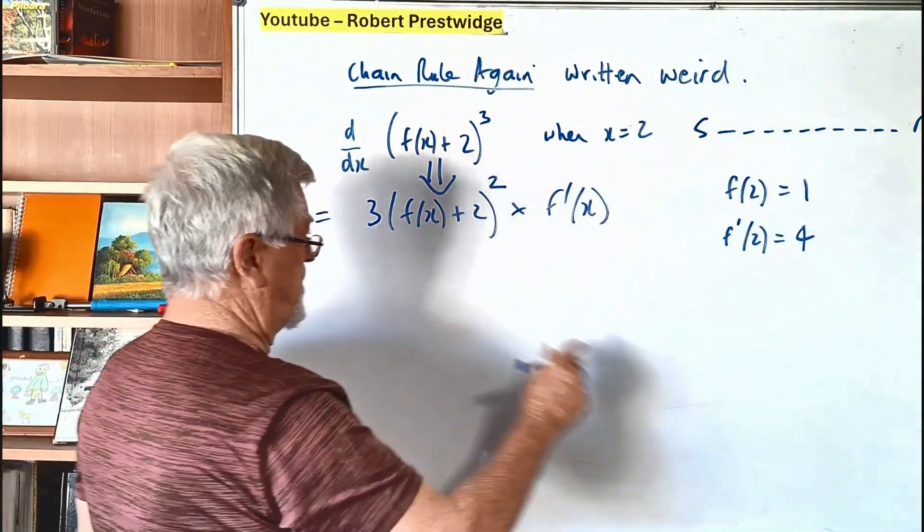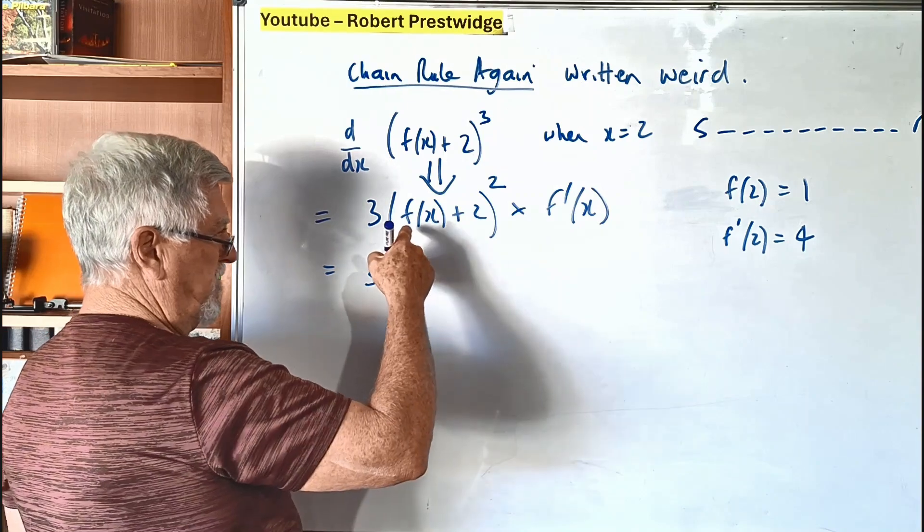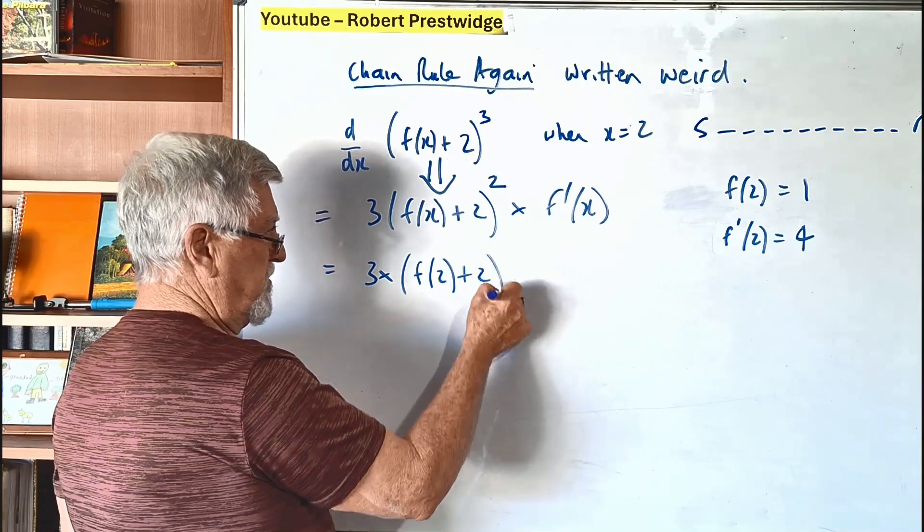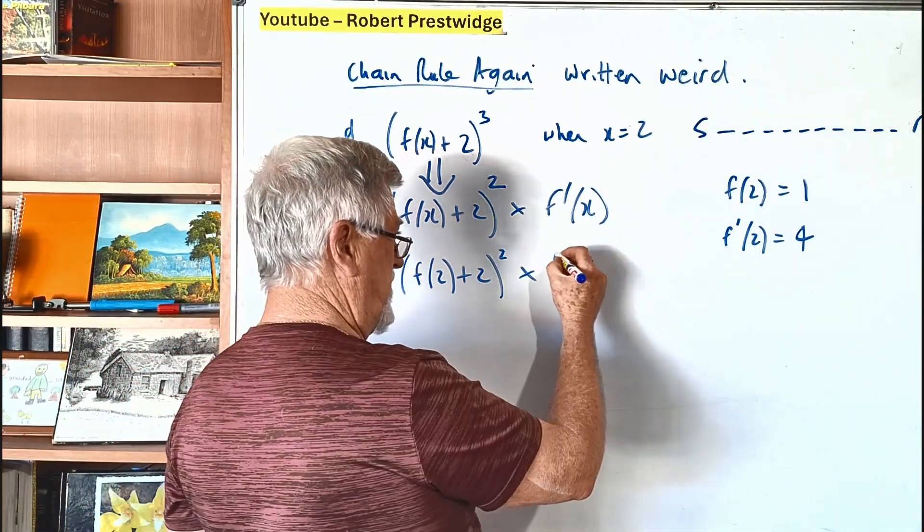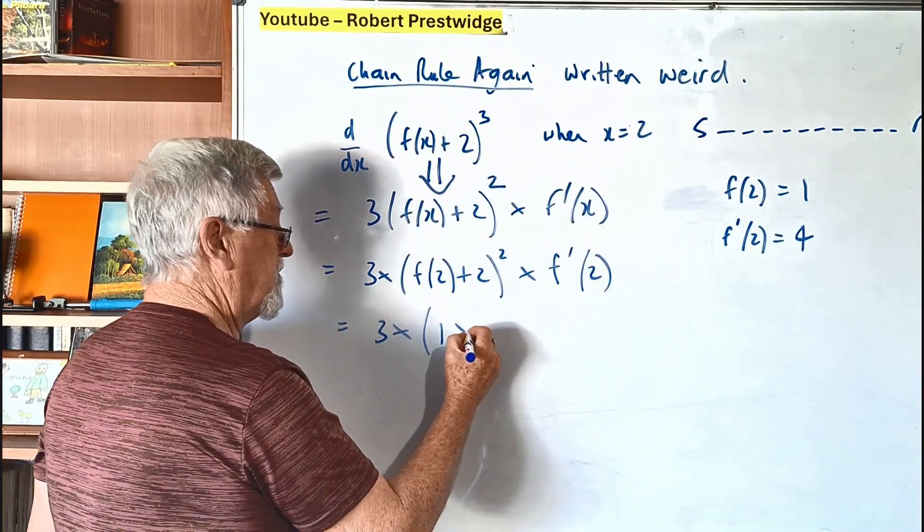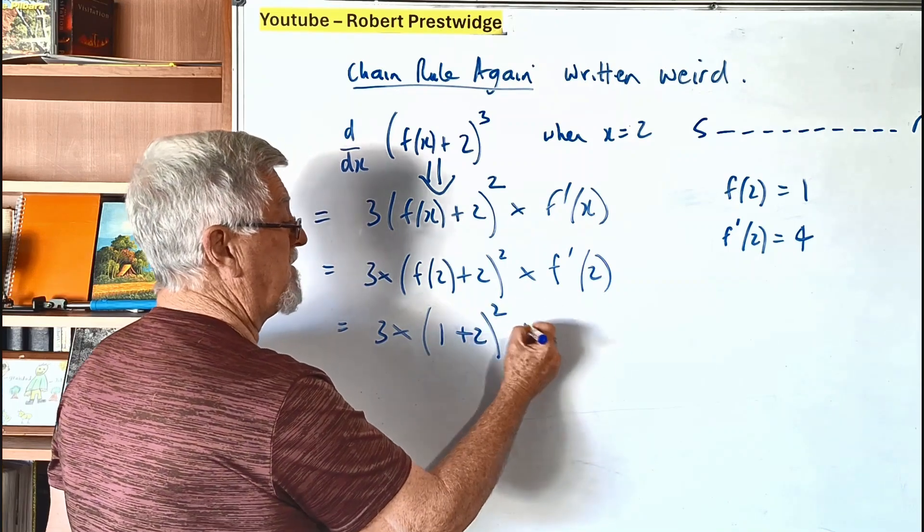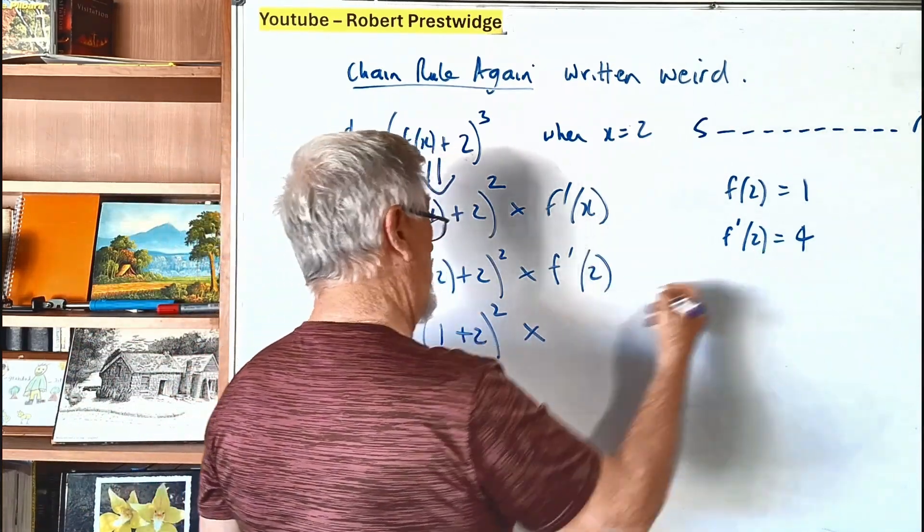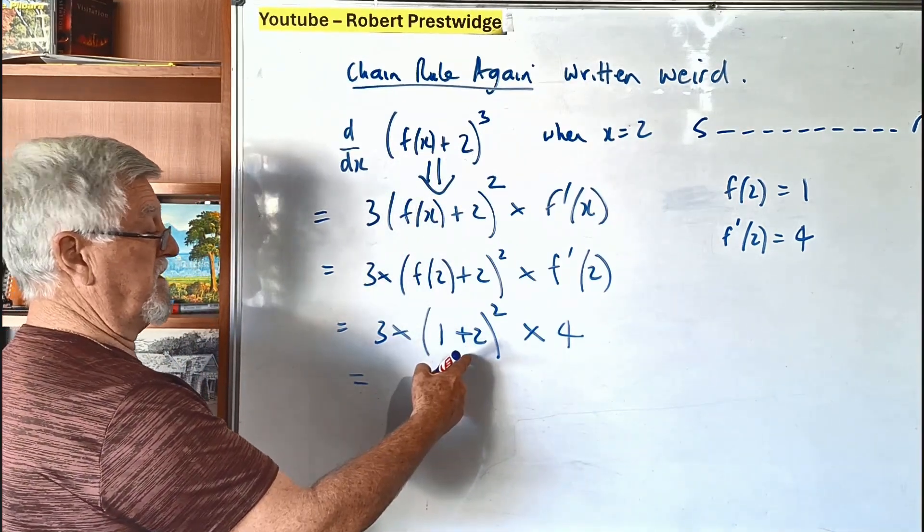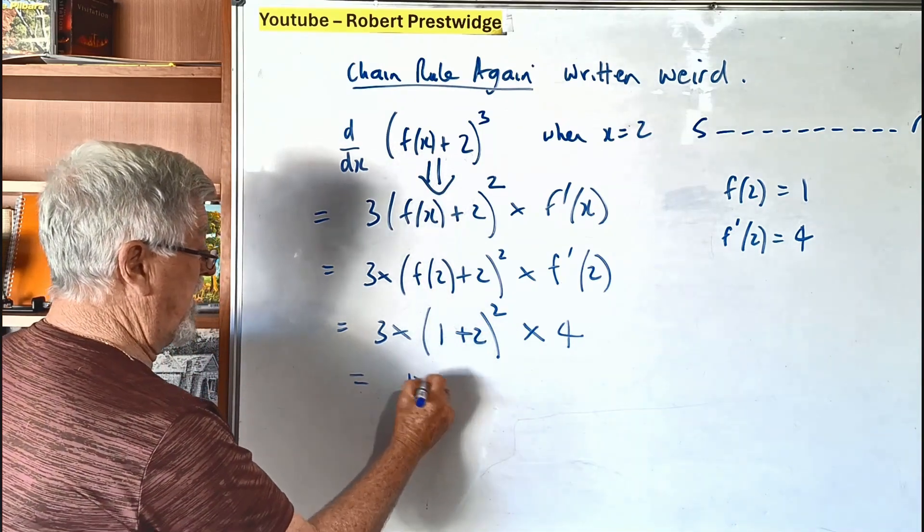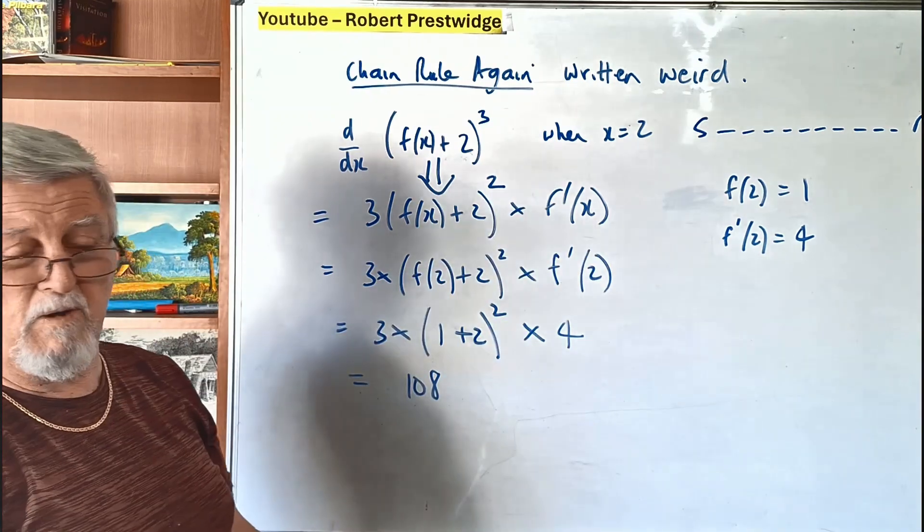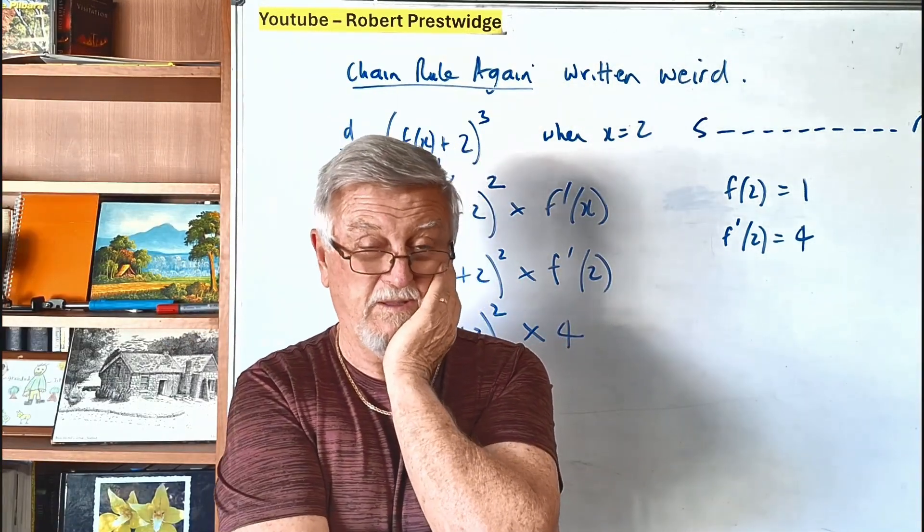So now we're just going to do substitution. So we've got 3 times the function when we're talking about 2. So the function, I could write it, let's write it. F(2) plus 2. I just don't want to become too laborious, guys. And then we want the derivative when it's 2. So now we just go substitution. F(2) is 1 plus 2. We're going to square it. And F'(2) is 4. And then you figure out what that is, which is 3 times 3 squared. That's 3 times 9, 27 times 4, which is 108. Hopefully I haven't made a mistake. Guys, it's just the same thing, the old chain rule, but written in a weird way. So I hope that helps. I've got another one coming in mind. Let's see what I can do.